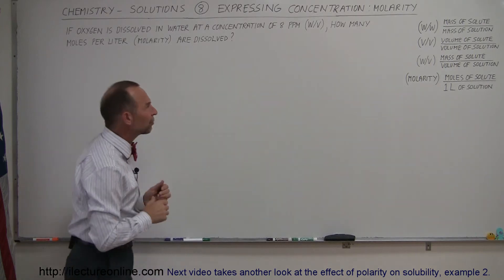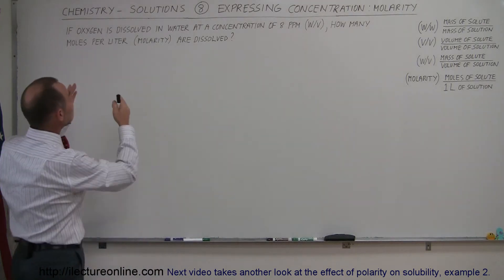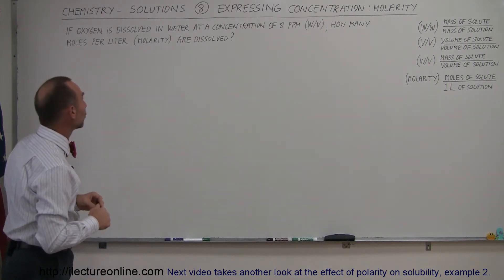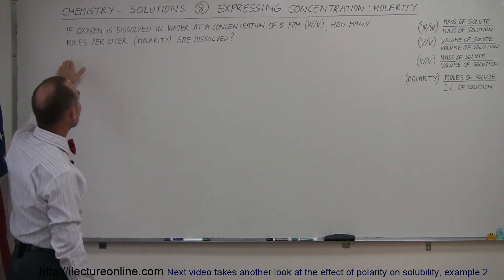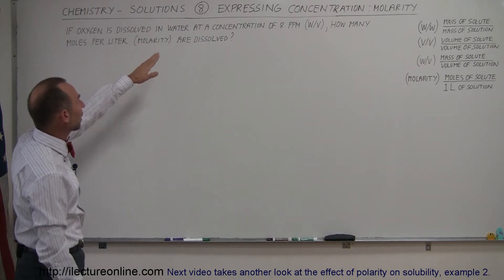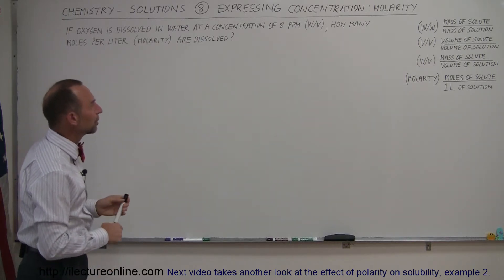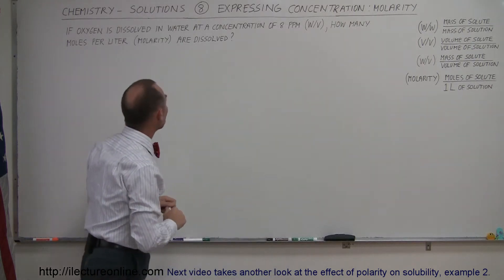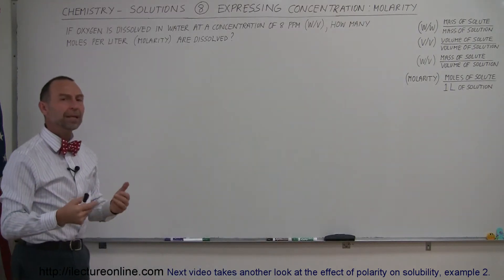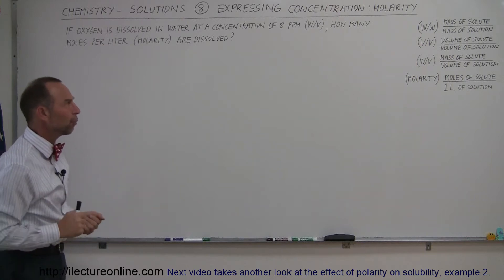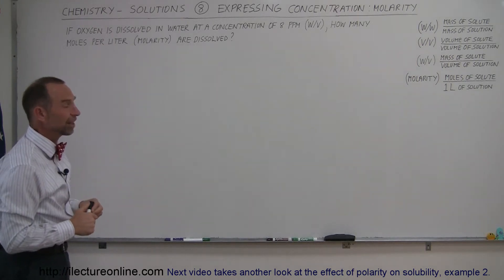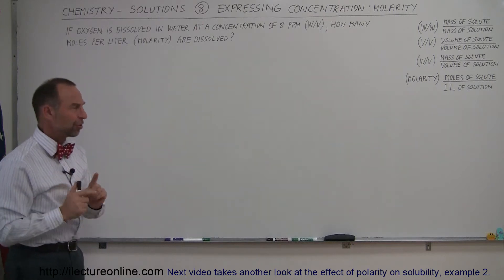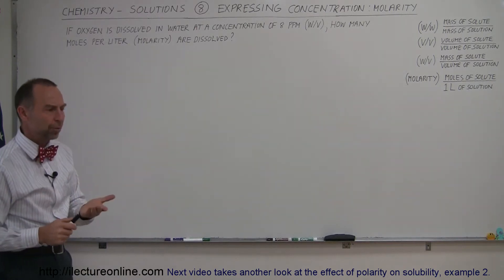To get some familiarity with it, we're going to do an example. Let's say we have oxygen dissolved in water at a concentration of 8 parts per million, which is weight-to-volume. How many moles per liter are dissolved? How many moles are there in a liter of water if the concentration expressed in weight-per-volume is 8 parts per million? Let's refresh our memory on what that really means.